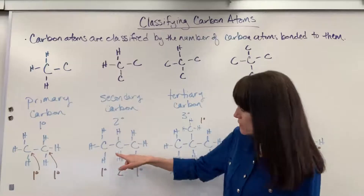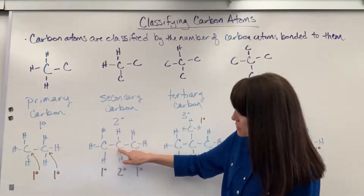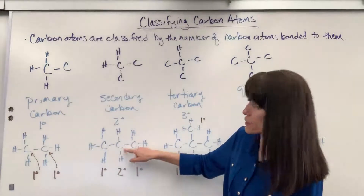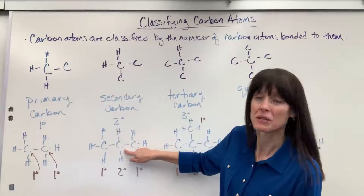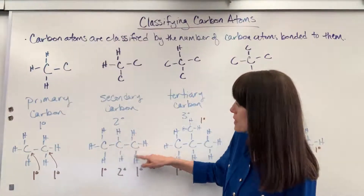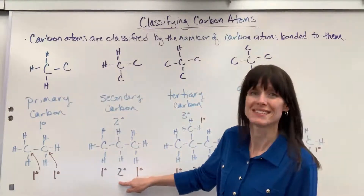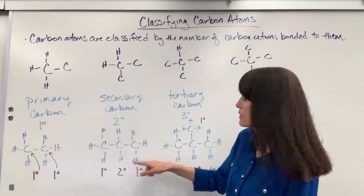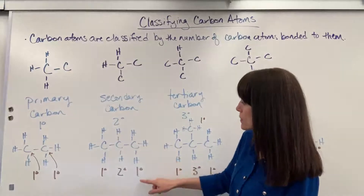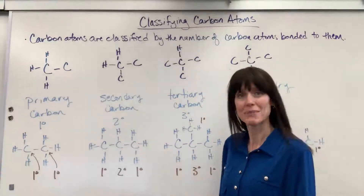Let's look at this. This carbon is bonded to one carbon, so it's primary. The carbon in the middle is bonded to two carbons — that's secondary. And then this carbon, only bonded to one carbon, is a primary.